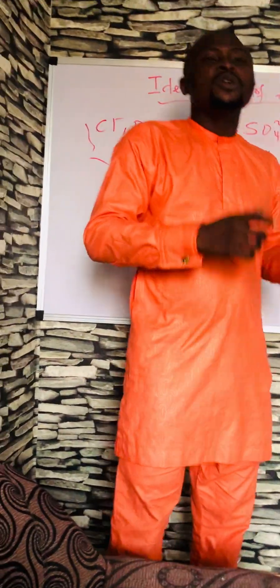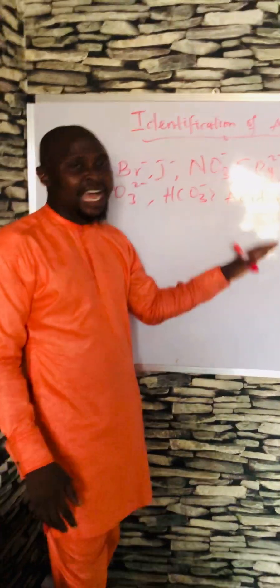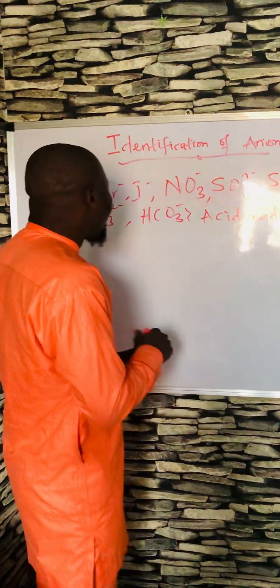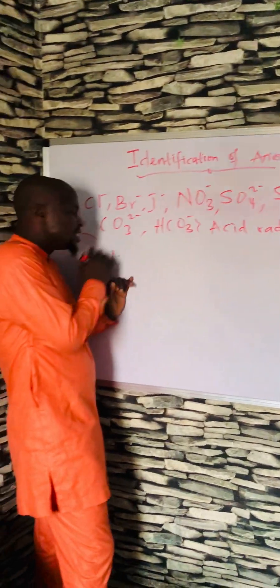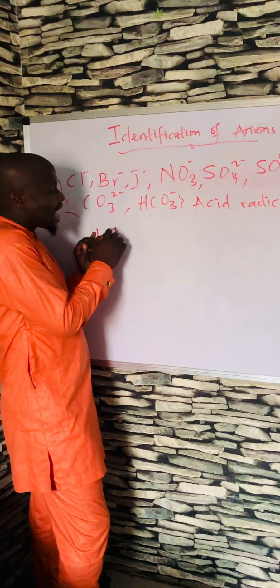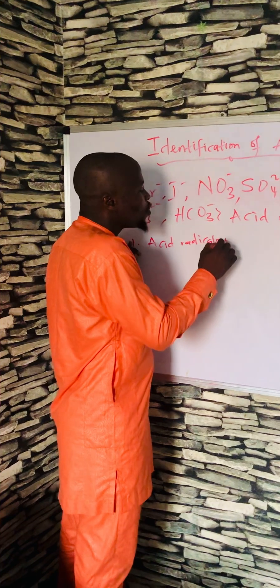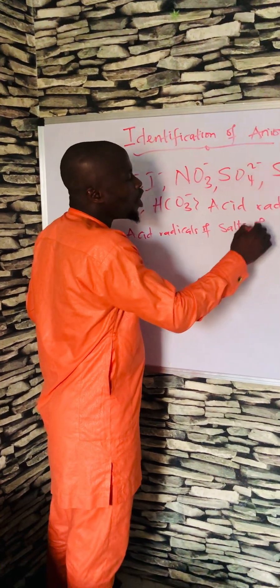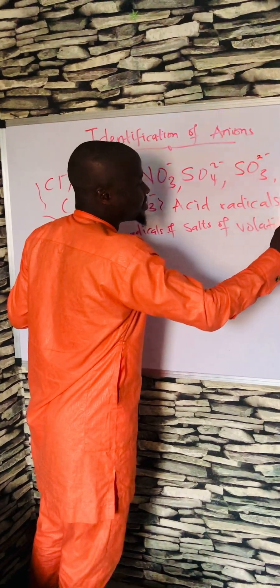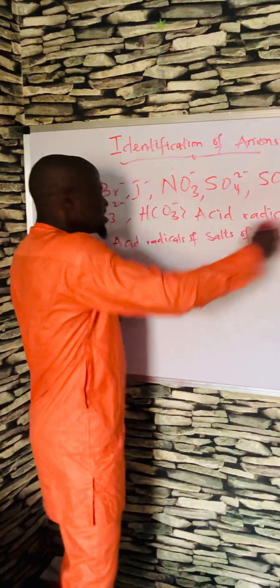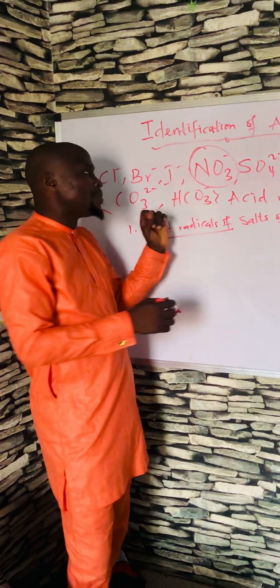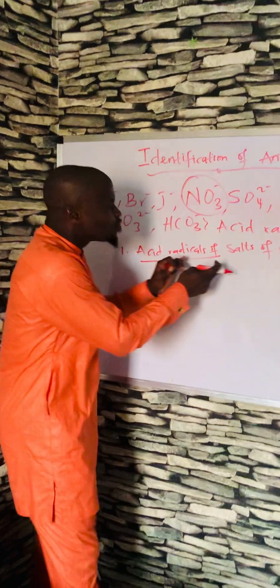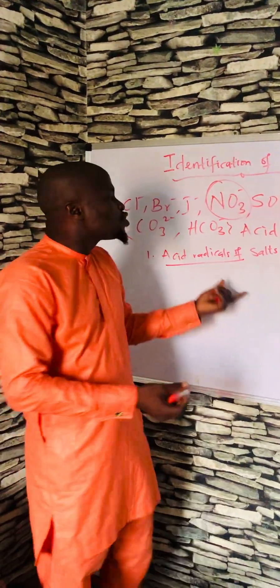Why do we call them acid radicals? When you add a hydrogen ion to each one of these, you are going to get acids. So they are broadly divided into three. The first one is acid radicals of salts of volatile acids. You know what acid radicals are — a group of charged atoms whereby you add a hydrogen ion and you get an acid. You know what salts are.